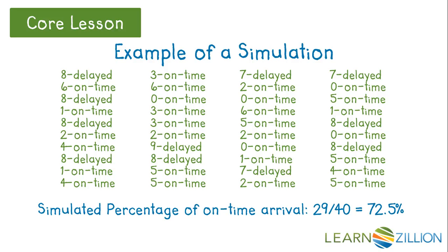In this simulation there were 29 out of 40 flights that were on time, so the simulated percentage is 72.5%. This percentage may not be the same if we had chosen another row or another starting point.